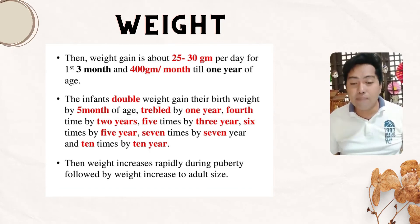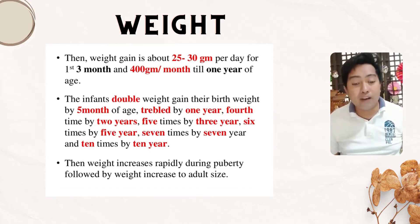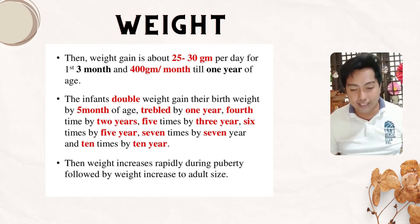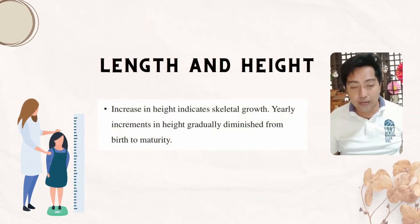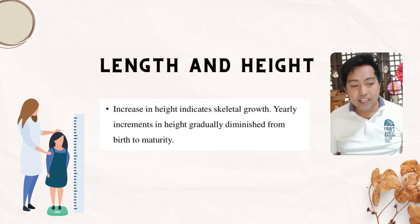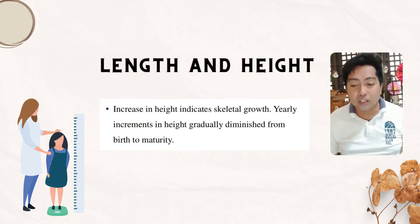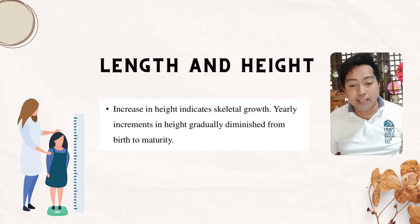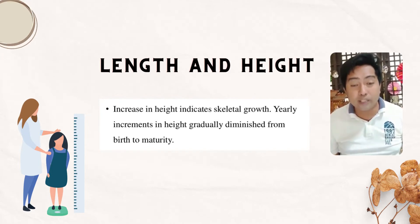Weight increases rapidly during puberty, followed by weight increase to adult size. Length and height increase indicates skeletal growth; the yearly increment in height gradually diminishes from birth to maturity.